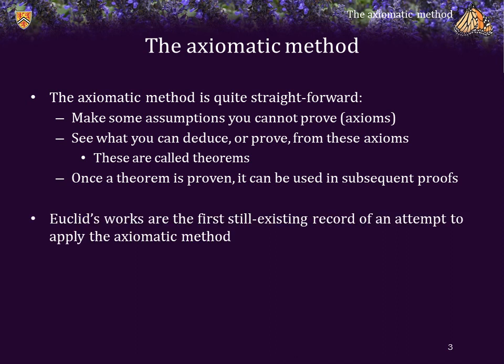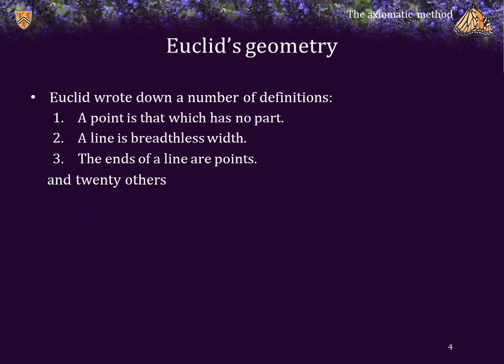The first example that still exists today of someone attempting to apply the axiomatic method is the work known as Euclid's Elements. Euclid wrote down a number of definitions, starting with: a point is that which has no part — meaning you can't divide a point into two separate parts, unlike a line. A line is breadthless width, and the ends of a line are points. He had that and 20 other such definitions.